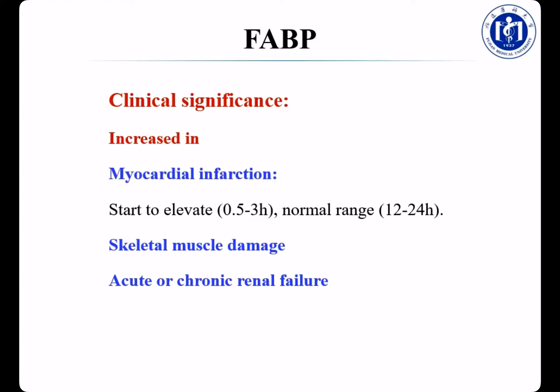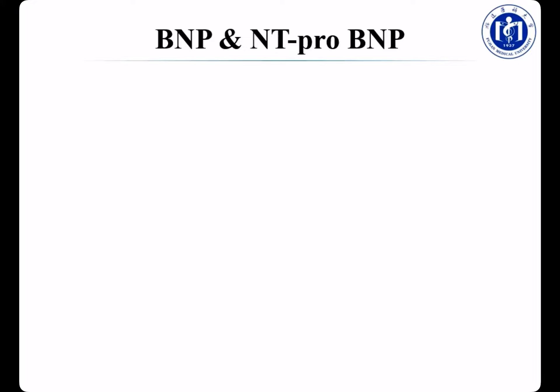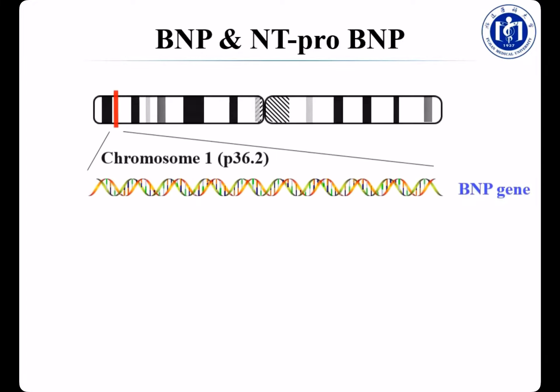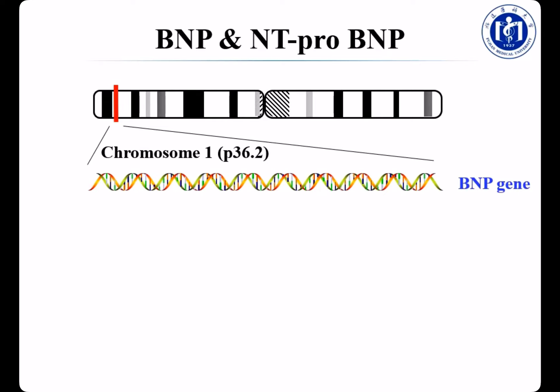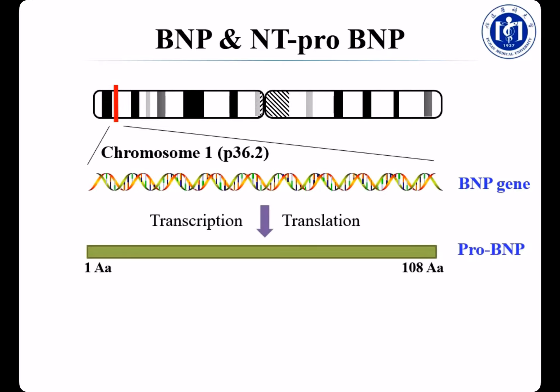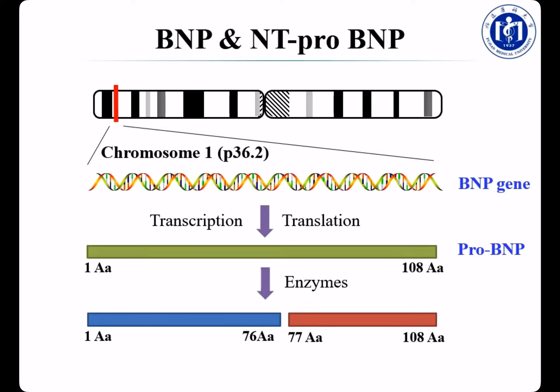The next protein is fatty acid binding protein (FABP). FABP functions in the uptake and intracellular transport of long-chain fatty acids in cardiomyocytes. The reference interval for FABP is less than 5 µg/L. FABP is mainly distributed in myocardial tissues, skeletal muscle, and kidney. Increased FABP is seen in myocardial infarction, skeletal muscle damage, and acute or chronic renal failure. For AMI patients, FABP starts to elevate 0.5–3 hours after onset of pain and falls quickly, reaching normal range in just 12–24 hours. So FABP can also be used for the early diagnosis of AMI.